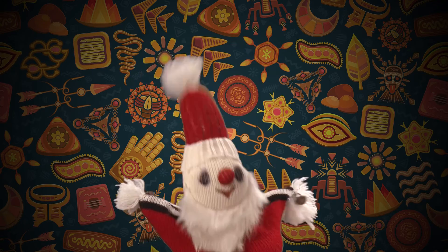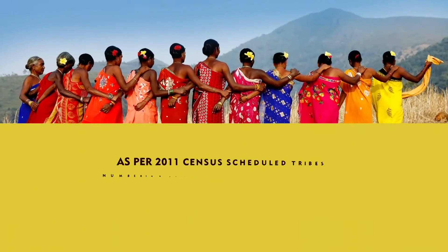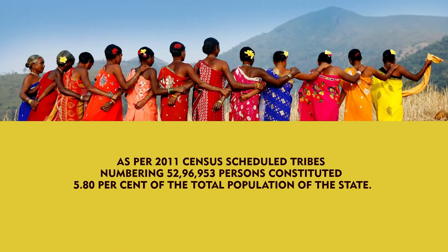Numerous tribes who reside in the rural parts of the state occupy West Bengal state. These tribes comprise less than one-tenth of the total population of the state. Demographics of tribes at Bengal: As per the 2011 census,